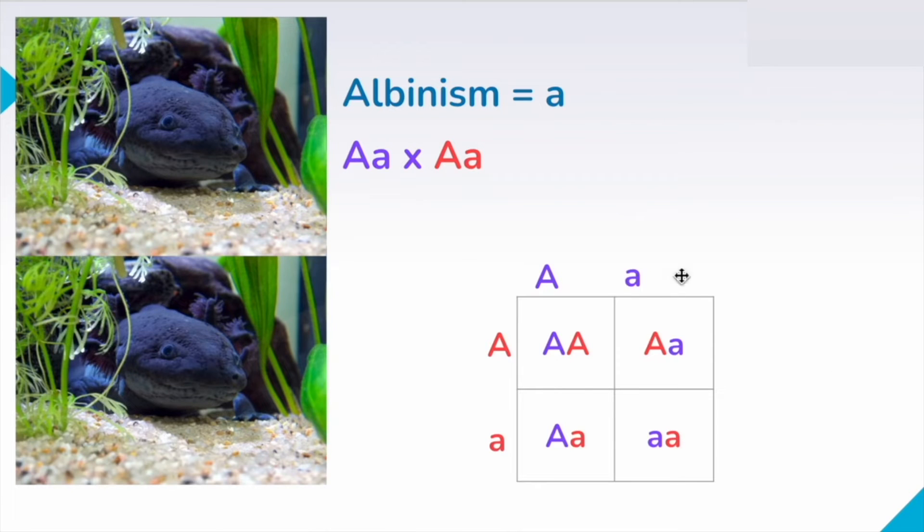So now we have the results of our Punnett square. We can see that there's a 25% chance of having offspring that will have a homozygous dominant genotype, meaning big A, big A. A 50% chance of having offspring that will have the heterozygous genotype, so big A, little a, and a 25% chance or one in four chance of having little a, little a or homozygous recessive. So these three combinations here would all mean this axolotl has pigment or it's a dark color because A is dominant over little a. An axolotl with little a, little a though, that genotype means it doesn't have any pigment because it has two copies of the recessive allele.